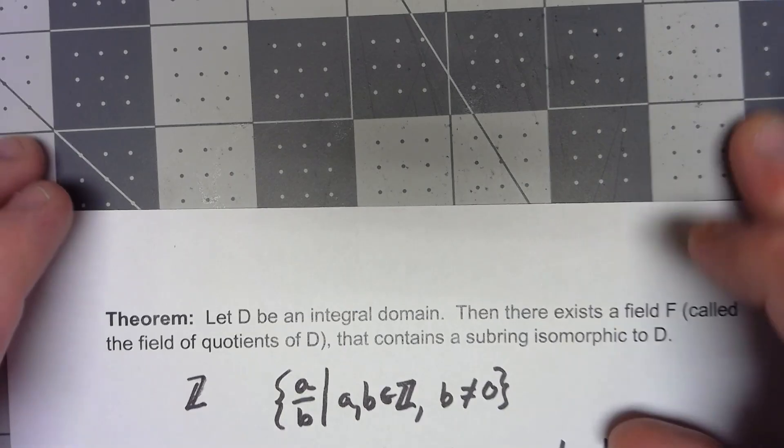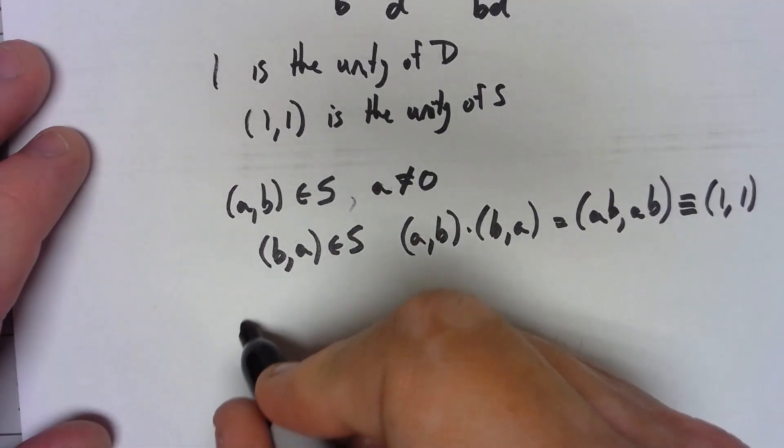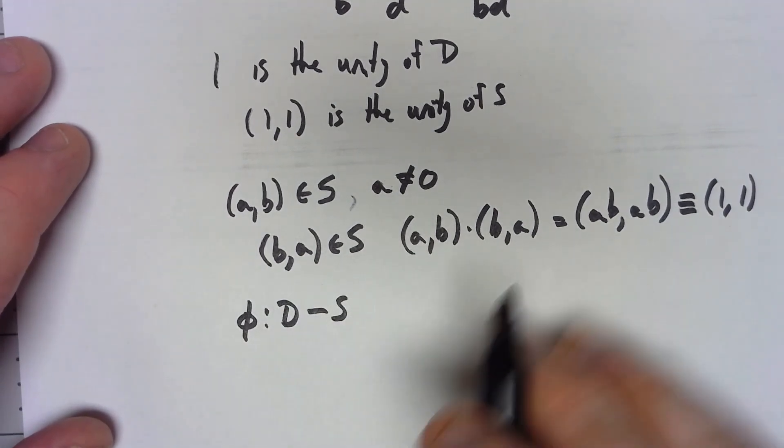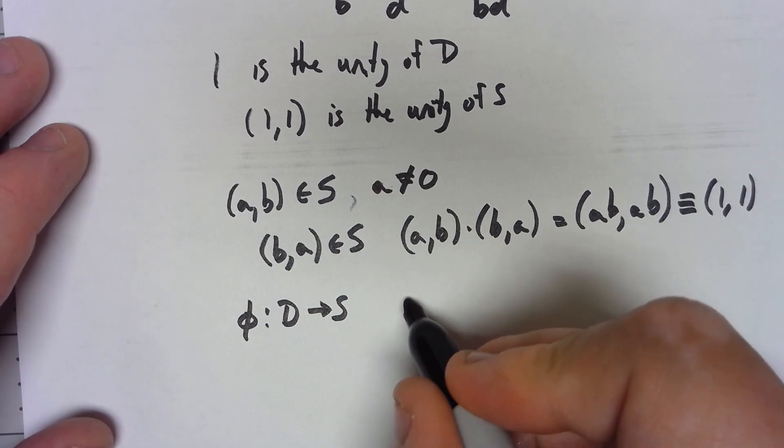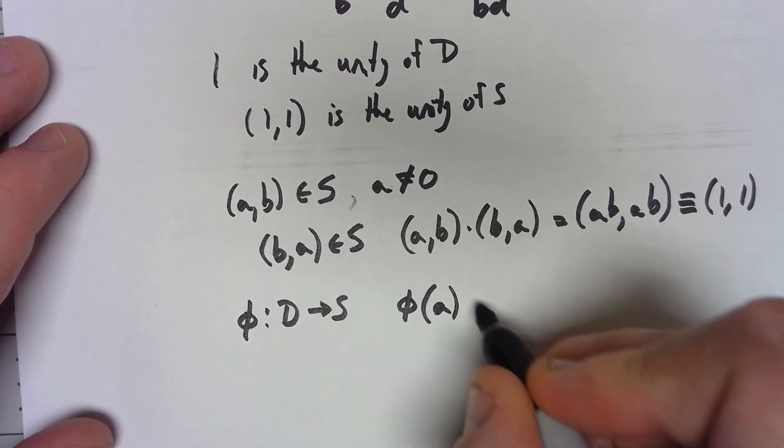But that's fairly easy too. We can take a mapping phi from D into S just by phi of some element of D, a, is (a, 1).